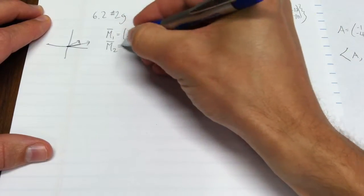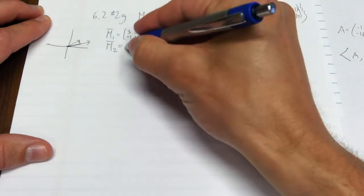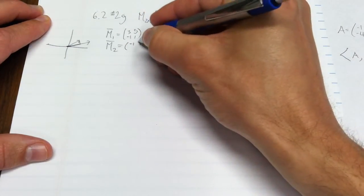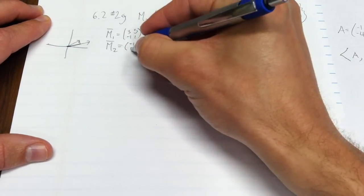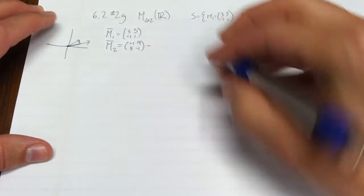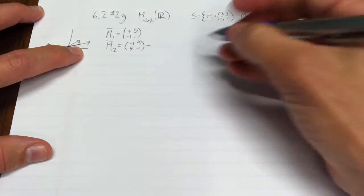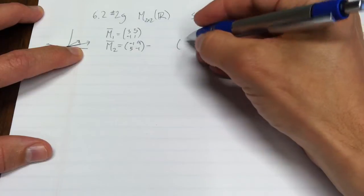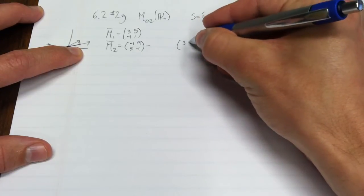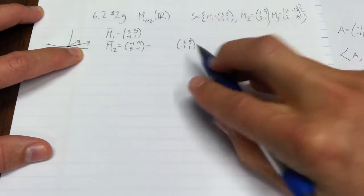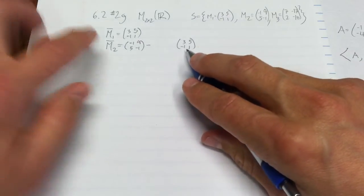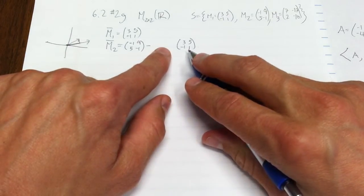That's what we're going to do here. We're going to say, well, m2 bar is going to be the old m2, (-1, 9, 5, -1), minus the piece that is in the direction of m1.